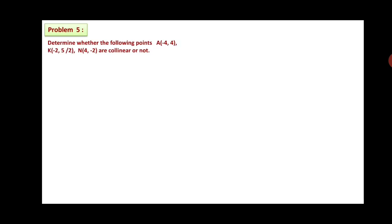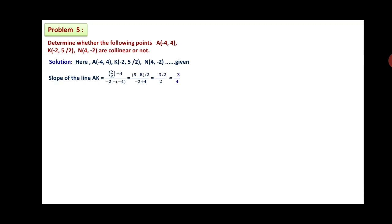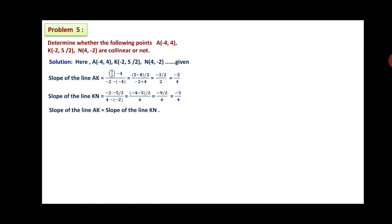Problem 5: Determine whether A(−4, 4), K(−2, 5/2) and N(4, −2) are collinear. Slope of line AK = (5/2 − 4)/(−2 − (−4)) = (5 − 8)/2 ÷ 2 = (−3/2)/2 = −3/4. Slope of line KN = (−2 − 5/2)/(4 − (−2)) = (−9/2)/6 = −3/4 after simplification. Since slope of AK = slope of KN = −3/4, points A, K and N are collinear.